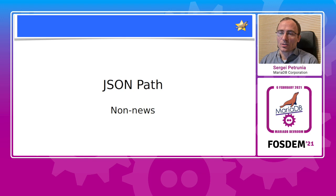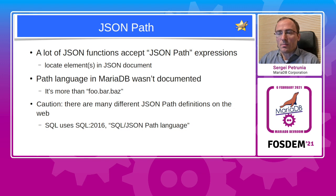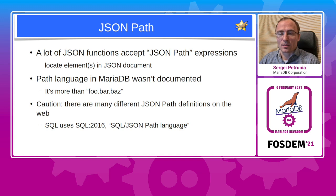The first topic is the JSON path — this is not news. There are multiple JSON functions in MariaDB already, and a lot of them accept JSON path expressions as an argument. These are used to locate elements in a JSON document. The path language in MariaDB wasn't documented until recently. Perhaps some people thought it was just follow.bar.buzz — obvious. But the reality is not that easy. If one searches for a definition of JSON path on the web, you can find many different definitions. The one that should be used with SQL language was defined in SQL 2016, in the section SQL JSON path language.